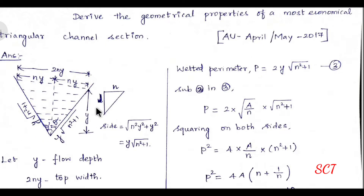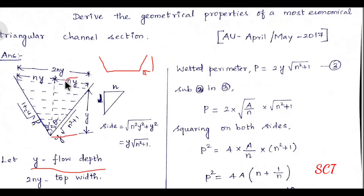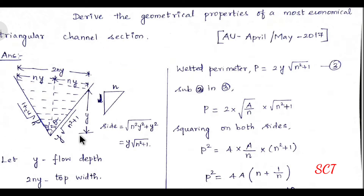In the triangular section, the flow depth is y. We will calculate the top width. In the trapezoidal section, we consider depth y and side slope n, so the horizontal distance from center to the side is ny. The top half mirrors the bottom half, so both sides contribute ny, giving a total top width of 2ny. The side slope is trapezoidal — you can see a depth of 1 and a width of n, so the horizontal projection is ny on each side.